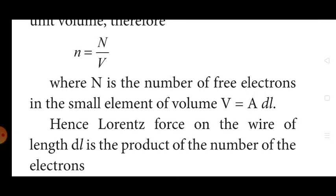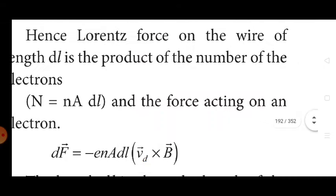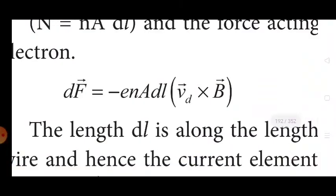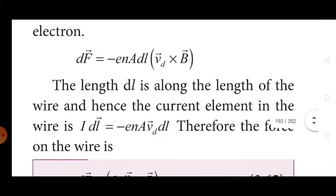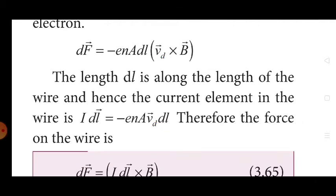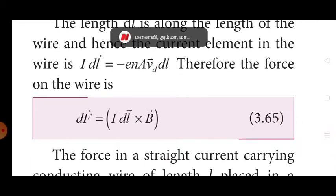Hence the Lorentz force on the wire of length dL is the product of the number of electrons, where N = nA·dL, and the force acting on the electron: dF vector = −enA·dL (Vd vector × B vector). The length dL is along the length of the wire, and hence the current element in the wire is: I·dL vector = −enA·Vd·dL. Therefore the force on the wire is: dF vector = I·dL vector × B vector.